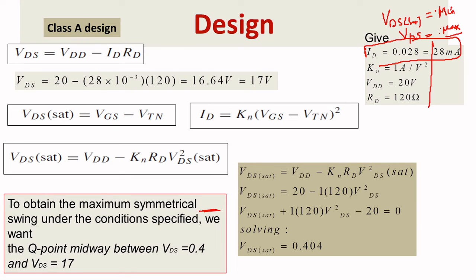In the previous problem the maximum VDS value was given. But here VDS maximum was not given — you need to find it. Very simple. You know the formula VDS equals VDD minus ID times RD. VDD is 20, ID is 28 milliamps, and RD is 120. Calculating gives 16.64, which rounds off to 17 volts.